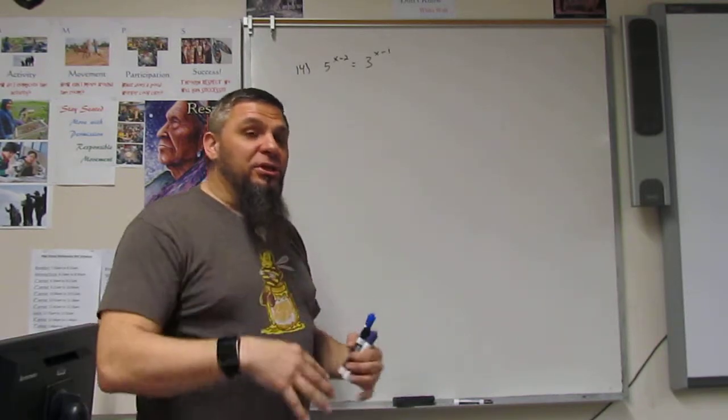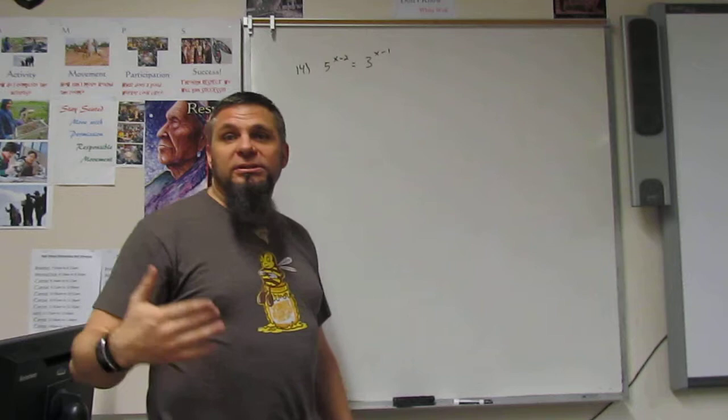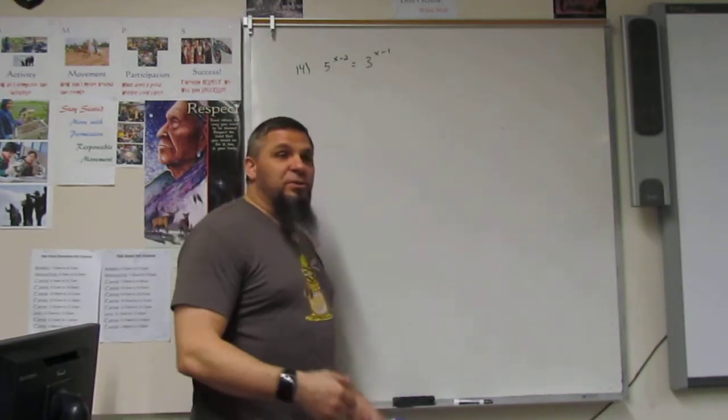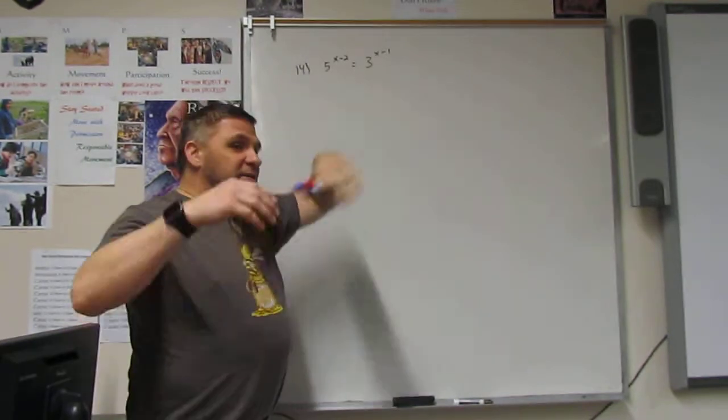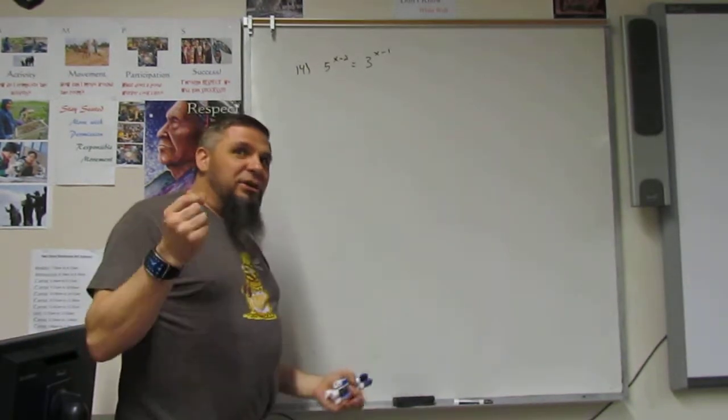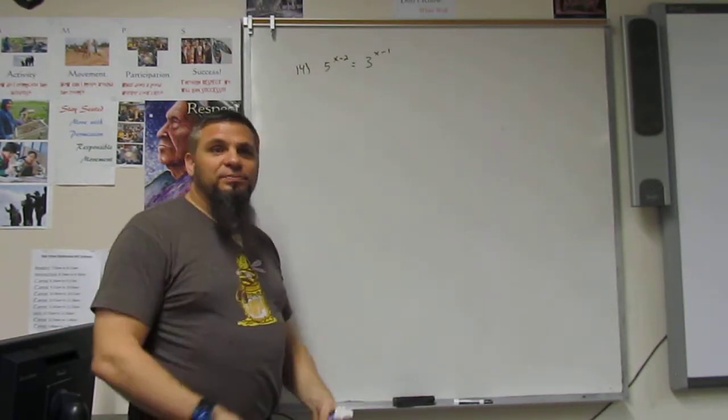So, a 2 can look like a 16, or a 32, or a 64. A 3 can look like a 27, or an 81. But a 5 and a 3, they'll never look the same. Well, they could, but it takes some serious work.